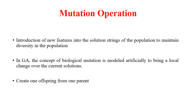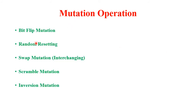Mutation is a process to invert gene values to introduce new features into the solution strings of a population, maintaining diversity. In genetic algorithms, biological mutation is modeled artificially to bring local change over current solutions. This mutation operation creates one offspring for each parent. Common mutation methods include bit flip mutation, random resetting, swap mutation, scramble mutation, and inversion mutation.